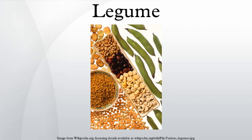Forage legumes are of two broad types. Some, like alfalfa, clover, vetch, stylo, or Arakas, are sown in pasture and grazed by livestock. Other forage legumes such as Leucaena or Albizia are woody shrub or tree species that are either browsed by livestock or regularly cut by humans to provide livestock feed.